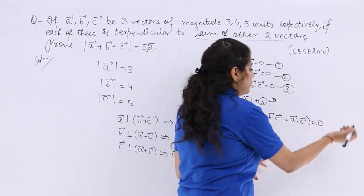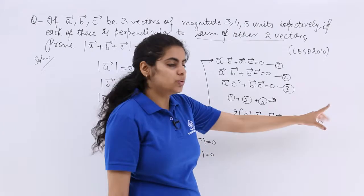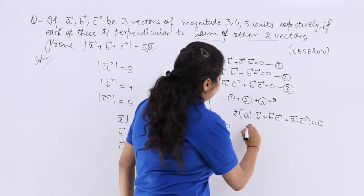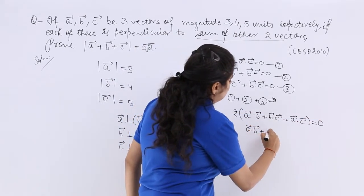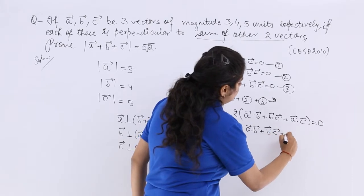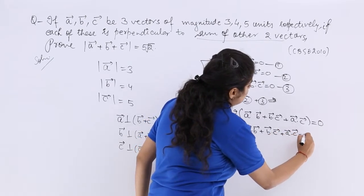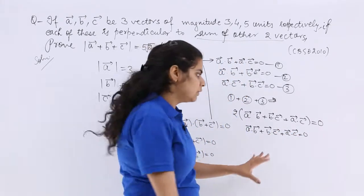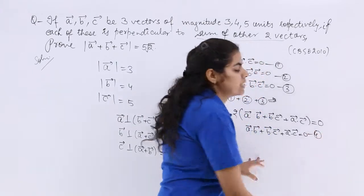And 0 means 0 vector probably. This 2 can go to the other side. So it is A vector dot B vector plus B vector dot C vector plus A vector dot C vector is equal to 0. Now this is another equation, let me name this as equation number 4.